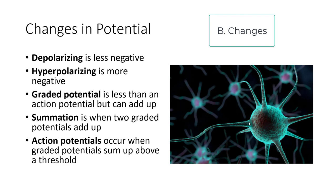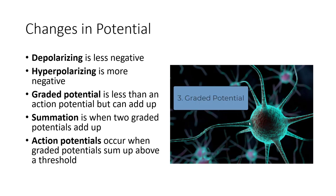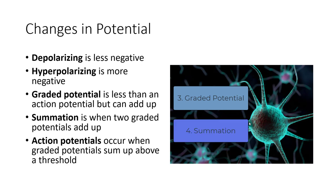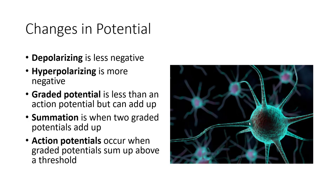Changes in the potential can occur. A depolarization is anything that makes the resting potential of negative 70 millivolts less negative. A hyperpolarization is anything that makes it more negative. There are different types of depolarization — one is a graded potential, which is less than an action potential. These can add up through summation: when two graded potentials add together, they can reach a threshold that triggers an action potential.